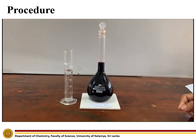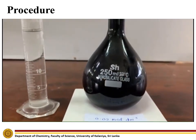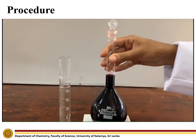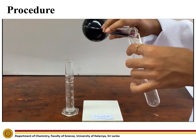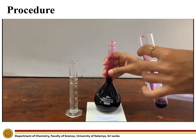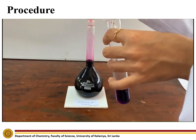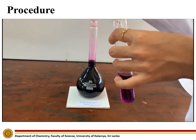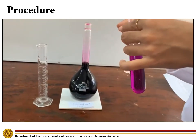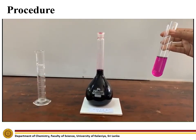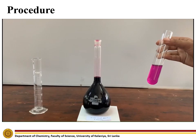First, we are going to dilute a dark purple, highly concentrated potassium permanganate solution and then observe the color. We can see that the intensity of the purple color reduces with dilution, giving a light purple color solution. Both the dark purple and light purple color solutions indicate the +7 oxidation state of Manganese.